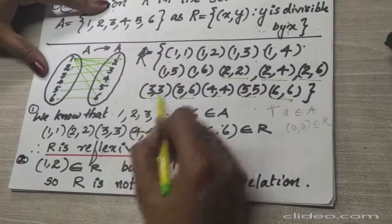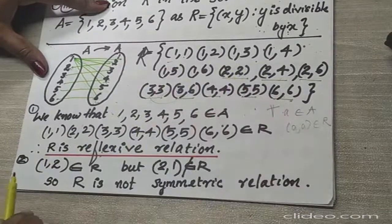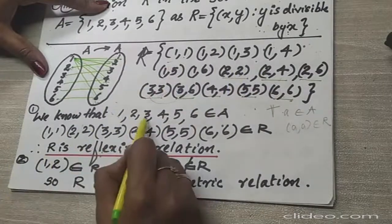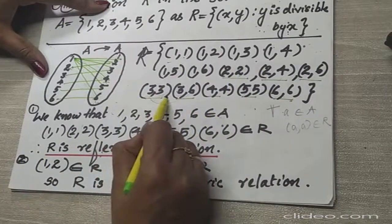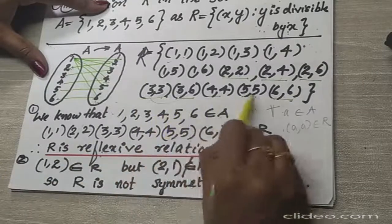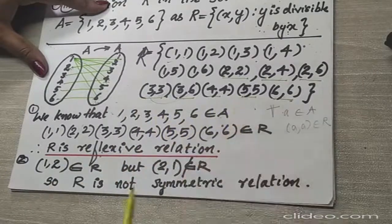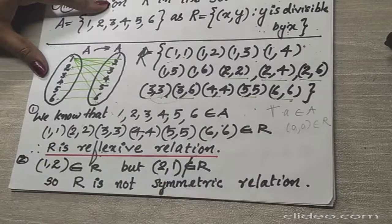If 2 belongs to A, then (2,2) should be there — it is there. If 3 belongs to A, then (3,3) should be there — that is there in the relation. Similarly, (4,4) is there, (5,5) is there, (6,6) is there. So the given relation is reflexive.